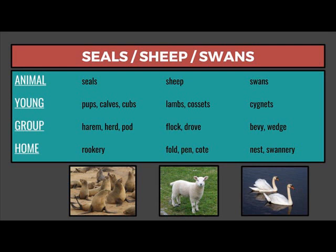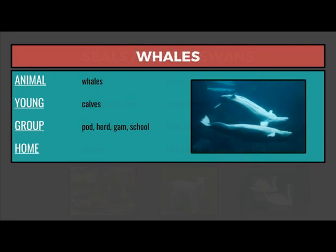The young of swans are signets. A group of swans is a bevy or wedge, and the home of swans is a nest or swanery. The young of whales are calves. A group of whales is a pod, herd, gam, or school, and there's no specific name for a home of whales.